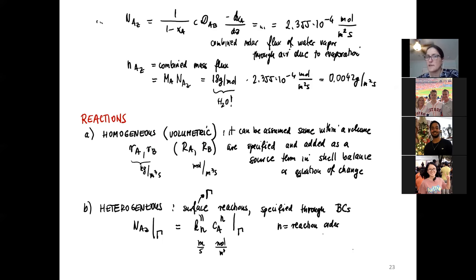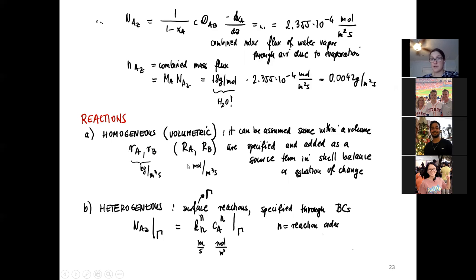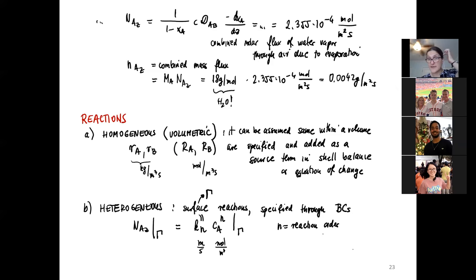Today we'll see some of those examples. First: if I have a problem where I know how much volumetrically of A is either produced or consumed, you want to use that — it's the simplest case. You have a term R_A that tells you how many kilograms of A is produced per cubic meter per second. If you're talking about moles, you have uppercase R_A — a production or consumption term in molar quantities. That's great if you have it. Often in practical situations, it's surfaces with large surface areas where reactions really happen.